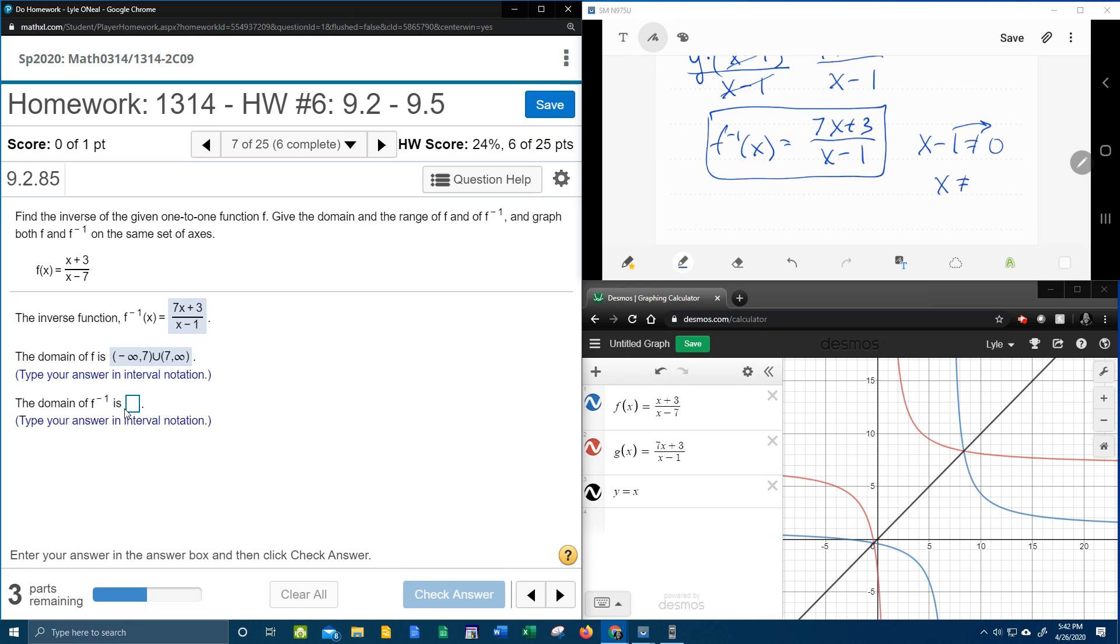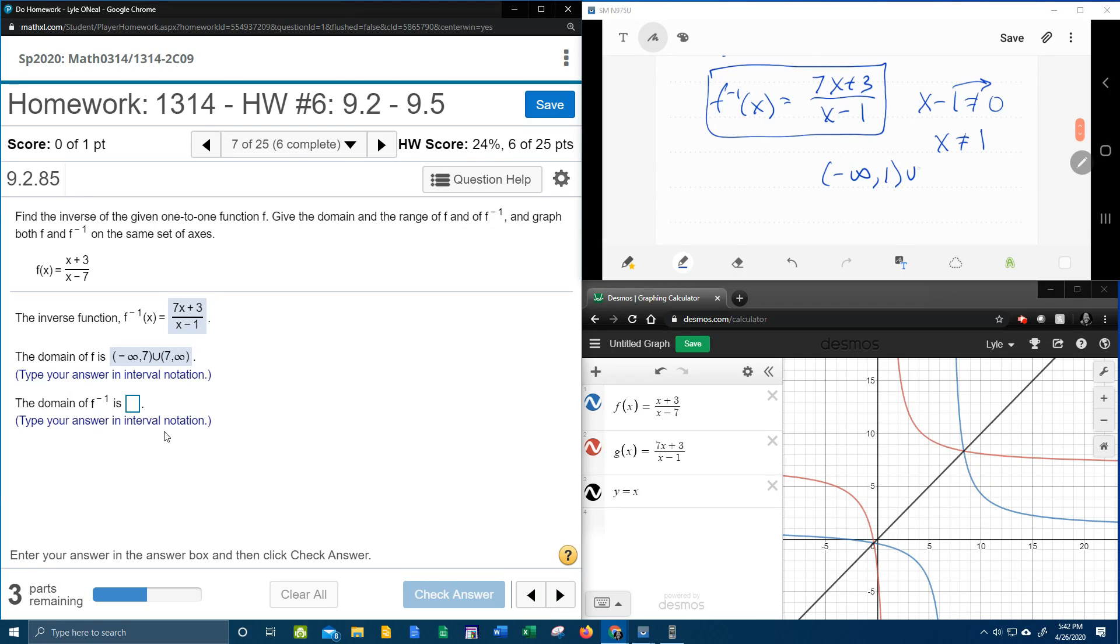And the restriction is that the denominator cannot be 0, and so here the restriction is x cannot be 1. So if I'm going to write that domain in interval notation, that's going to be everything from negative infinity up to 1, skip over 1 and keep going.